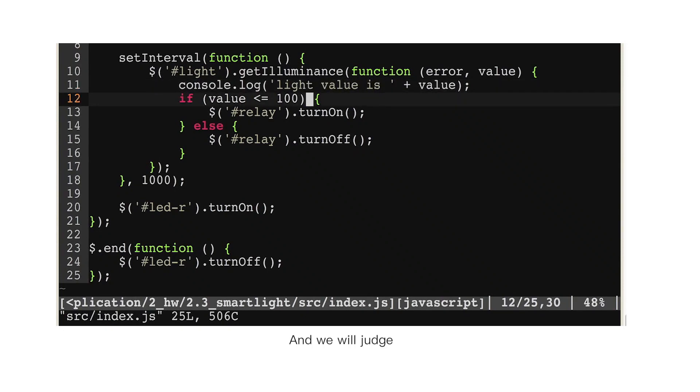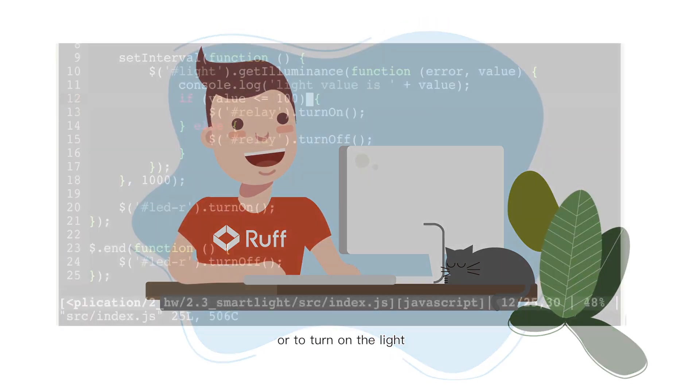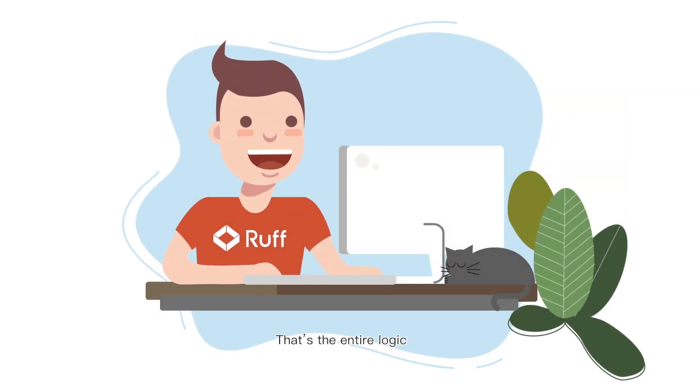And we will judge if it is less than or equal to 100, we turn on the relay, or to turn on the light. If it exceeds 100, we turn off the relay, or to turn off the light. That's the entire logic.